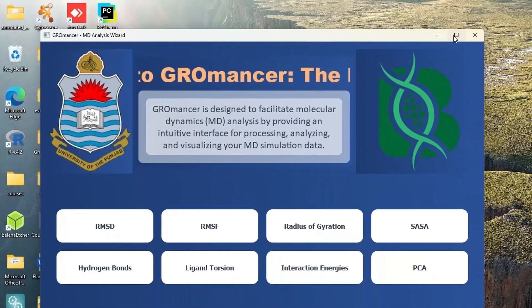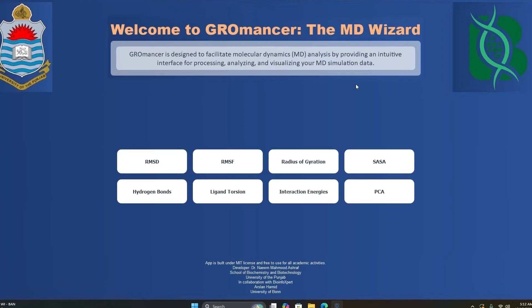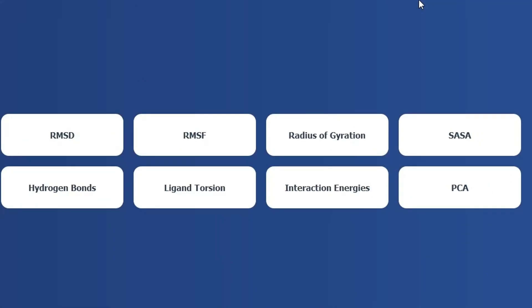Please double click on it to open Gromancer. When you double click on it, Gromancer will appear in front of you. On the graphical user interface of Gromancer, you can see 8 different buttons, including RMSD, RMSF, radius of gyration, SASA, hydrogen bond, ligand torsion, interaction energies, and PCA.